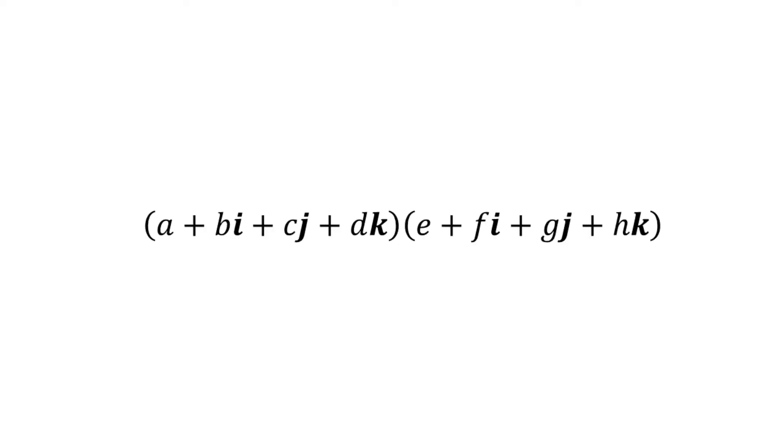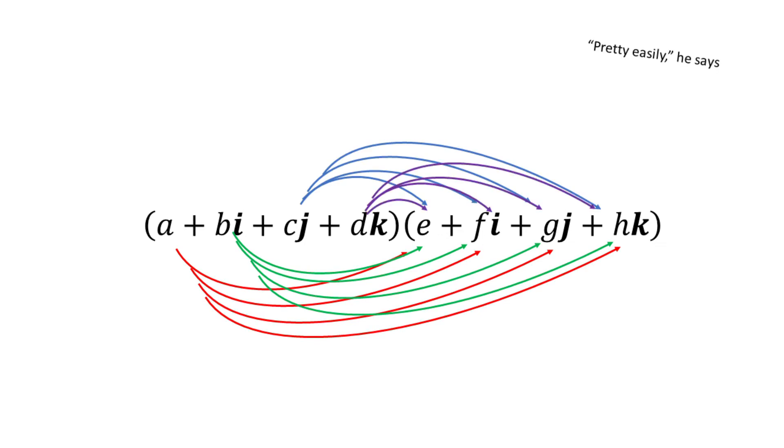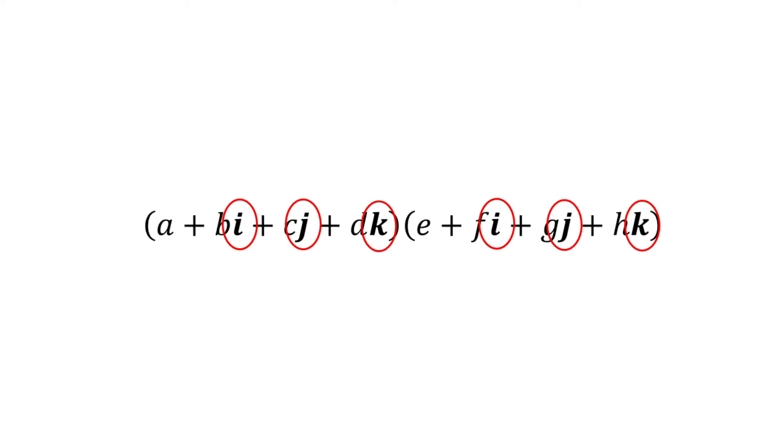The biggest thing we care about is quaternion multiplication. If you have two quaternions, we can pretty easily just distribute each term to the others, like we've learned in basic algebra class.